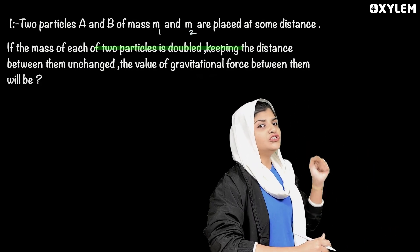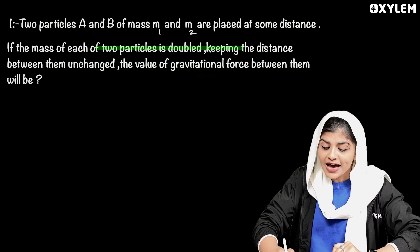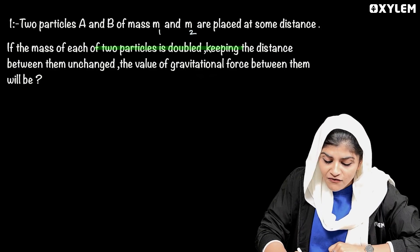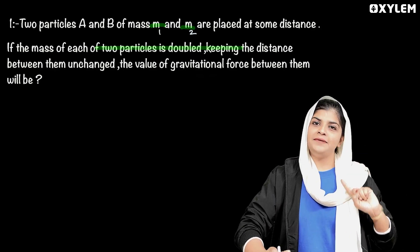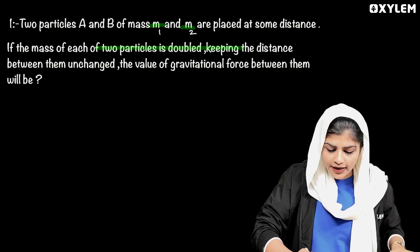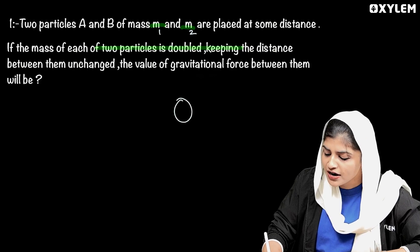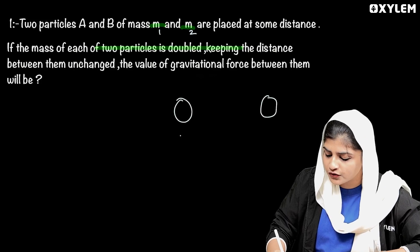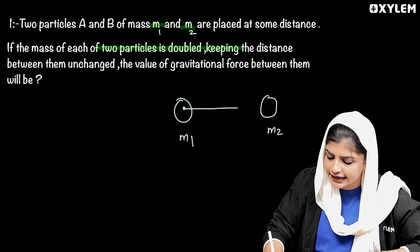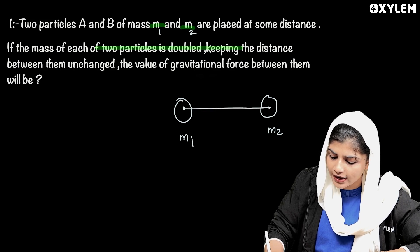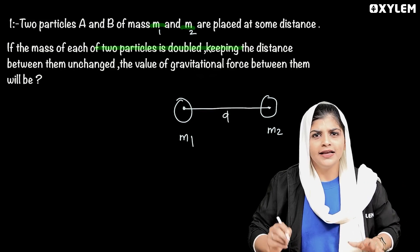Two particles A and B of masses M1 and M2 are placed at some distance. There are two masses, M1 and M2, separated by a certain distance D. We are going to talk about the gravitational force.